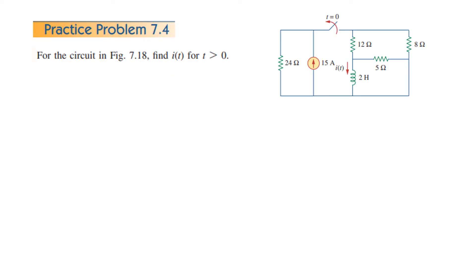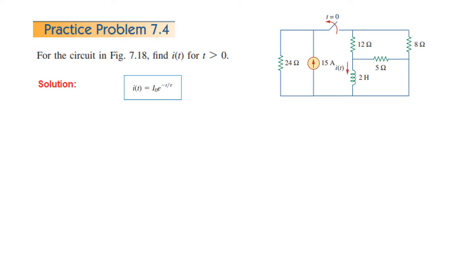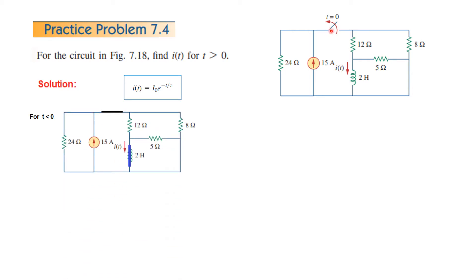Let us see practice problem 7.4. For the circuit we have to find i(t) for t greater than 0, and for this we need to use this equation. First of all we need to find I0, which is found for t less than 0. So let us draw the circuit for t less than 0 — at t less than 0 this switch is closed. It will open at t greater than 0, and the circuit is in steady state, so the inductor will behave like a short circuit.